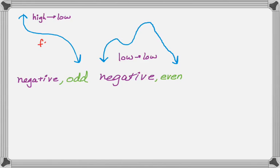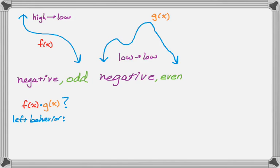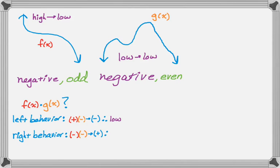What if we call the first one f(x) and the second one g(x)? What kind of polynomial do you get when you multiply f(x) times g(x)? I can figure that out just by looking at the end behavior. For f(x), the left end behavior is high — positive y values. For g(x), the left end behavior is low — negative values. Positive times negative is negative, so the left end behavior of the product is low. For the right side, f(x) is negative and g(x) is also negative — negative times negative is positive, so the right end behavior is high. That means the product goes low to high, which is a positive odd function.